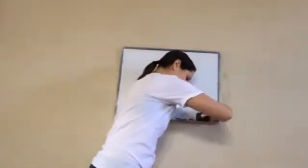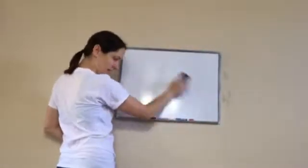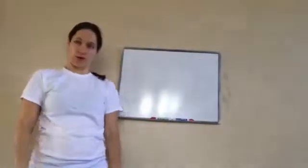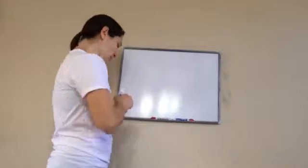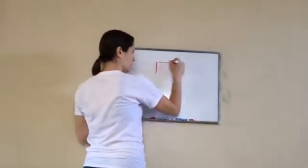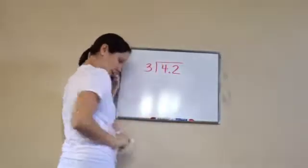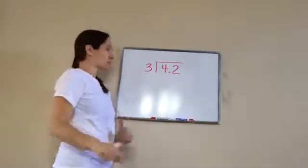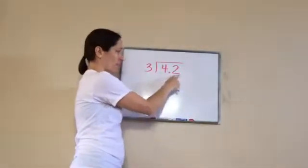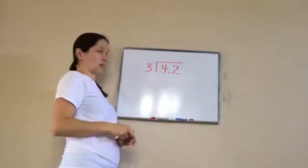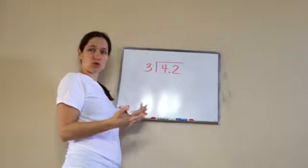Okay, sixth grade lesson 45. This is on dividing a decimal number by a whole number. Write this problem on your paper. This is an example of what we're going to be looking at today - dividing a decimal number by a whole number. This is actually pretty simple. You're going to pretend like the decimal's not there and work the problem like normal.